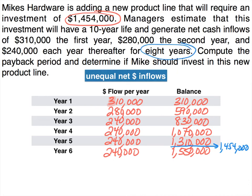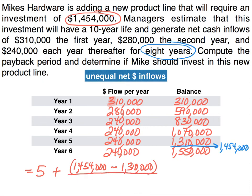Knowing it falls between five and six years, and the asset lasts eight years, we already know it's a good investment — but let's be more specific. We take the investment of $1,454,000, subtract the amount accumulated at the end of year five ($1,310,000), and divide that remainder by the year six payment of $240,000 to find the proportion of year six needed. When you do the math, the payback period is 5.6 years for this investment to pay itself back.